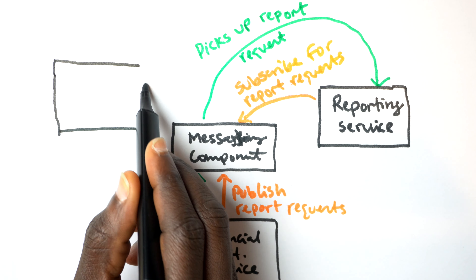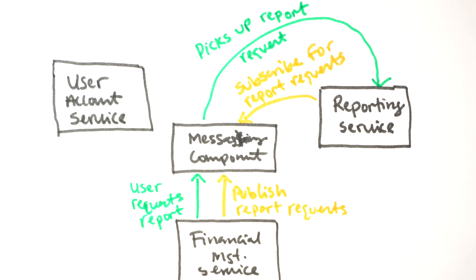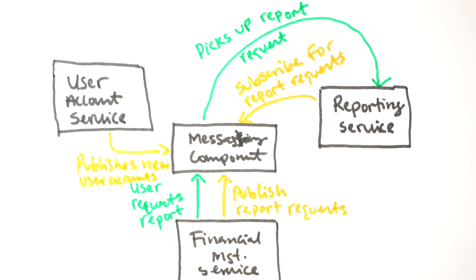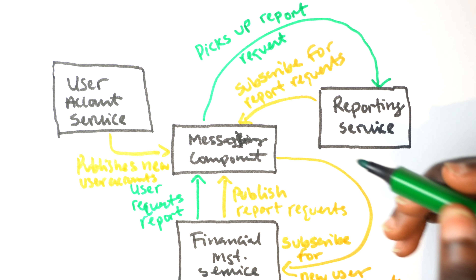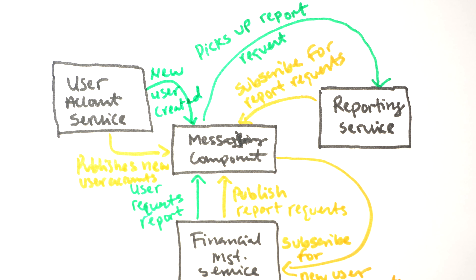Meanwhile, the reporting service is notified of the new task to generate a report for that user, with the relevant data and time period. It picks up the data, generates the report, and sends the download link to the user. For the other coupling — when a new user account is created — instead of the user account service directly communicating with the financial management service, it publishes that new user data to the messaging component. The financial management service, already registered as a consumer, picks up the data and creates the space for that user.